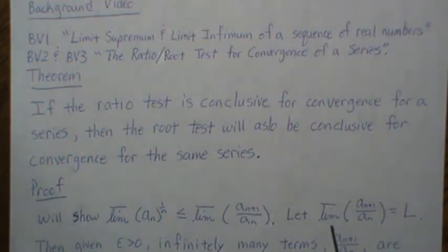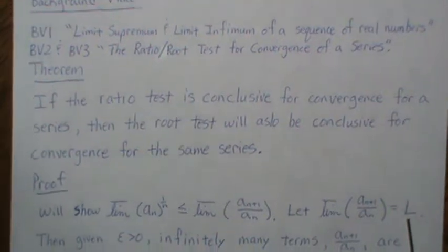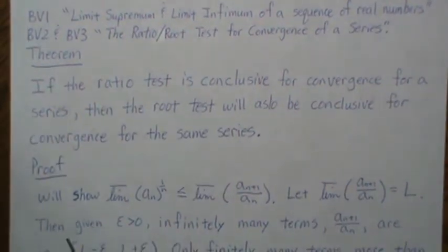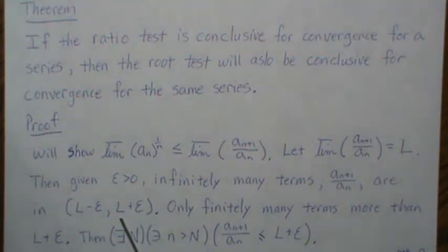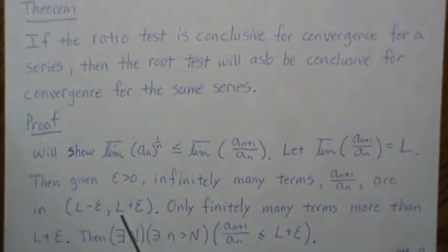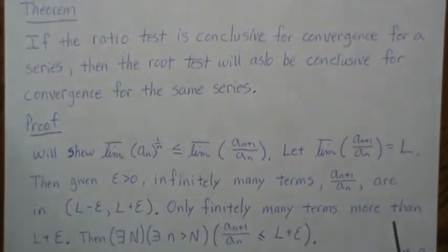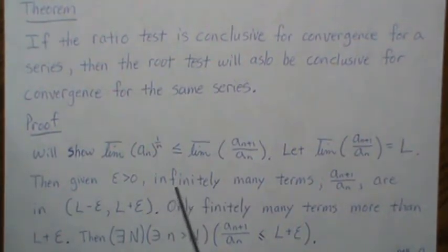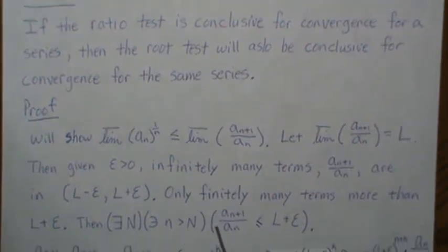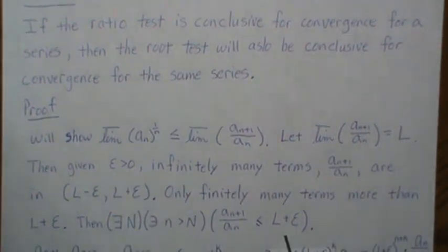Let the limit infimum of this ratio be L. Then given epsilon greater than zero, there are infinitely many terms in the interval (L − ε, L + ε), and that's by BV1. Only finitely many terms exceed L plus epsilon. So at some point we can find an N large enough such that for all n bigger than that N, all the terms are less than L plus epsilon.